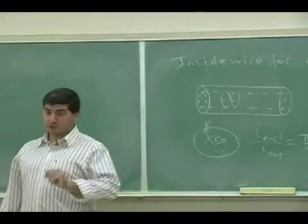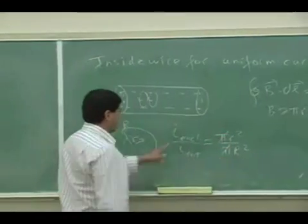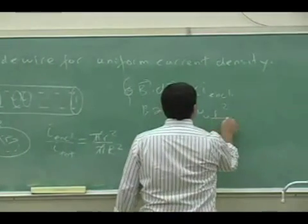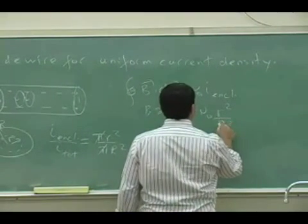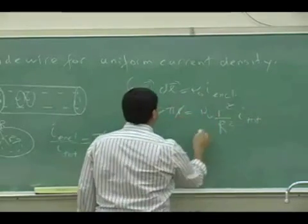If it is uniform density. So the pi and the pi cancel and then I can put that for I enclosed. I enclosed is R squared over R squared times I total and then when I solve this, one of the R's cancels.